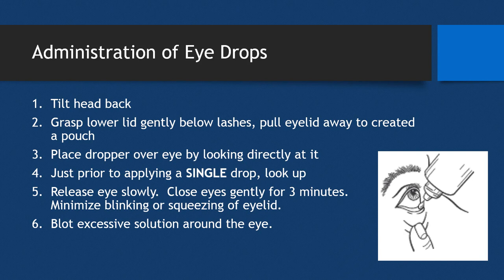After applying a single drop, release the eyelid slowly and then close the eyes gently for about three minutes. The best way to do this is to place the head down as though looking at the floor, using gravity to pull the drop and medication into the cornea for most effective treatment. Minimize blinking or squeezing during that time, then blot excessive solution around the eye. If applying multiple drops, wait before applying the next — never more than one drop at a single time.